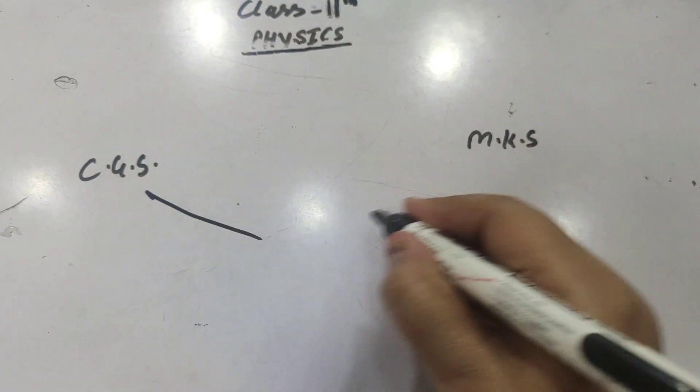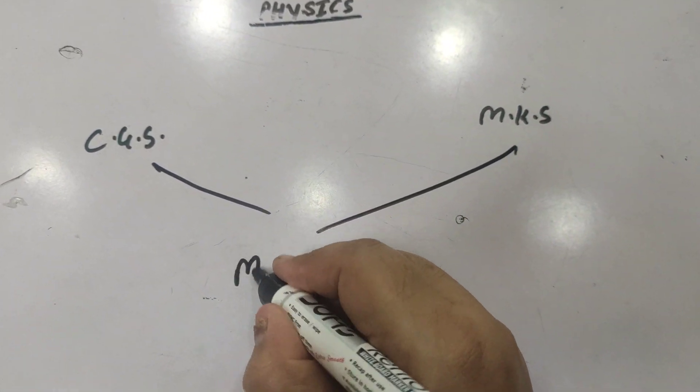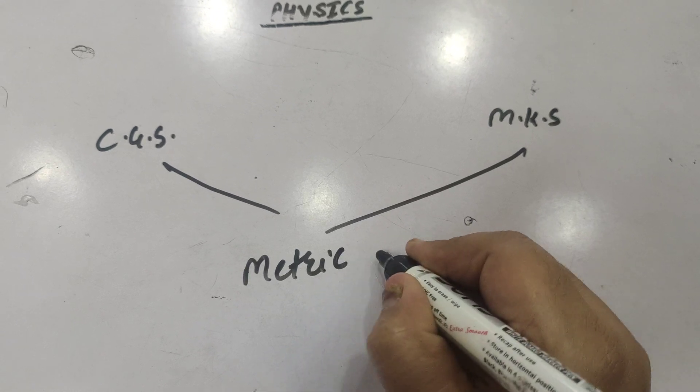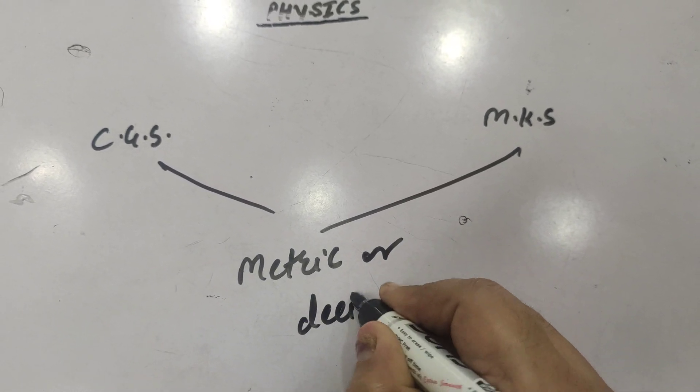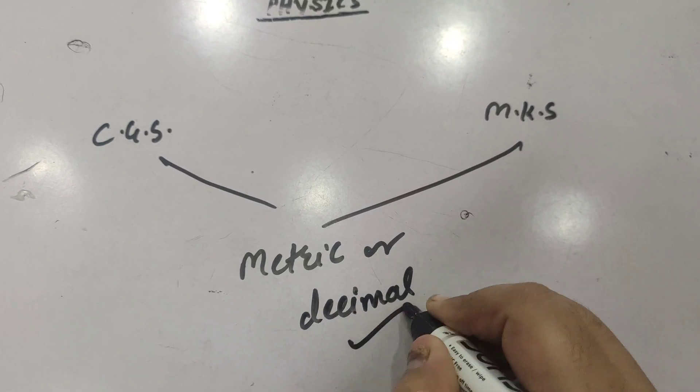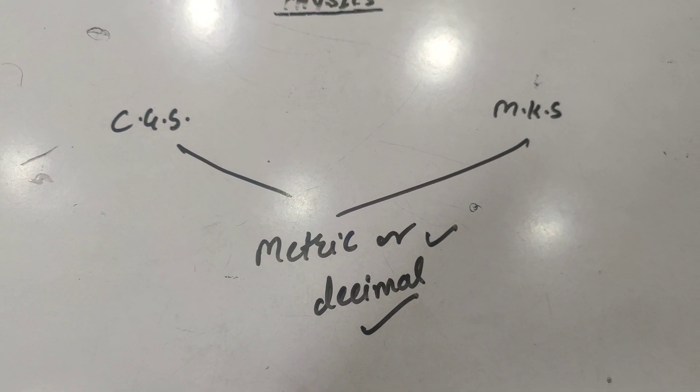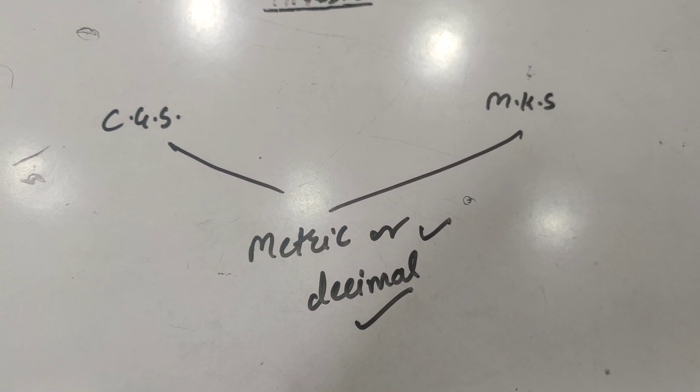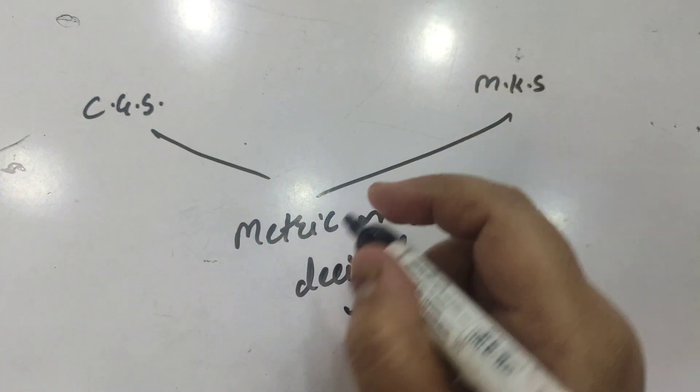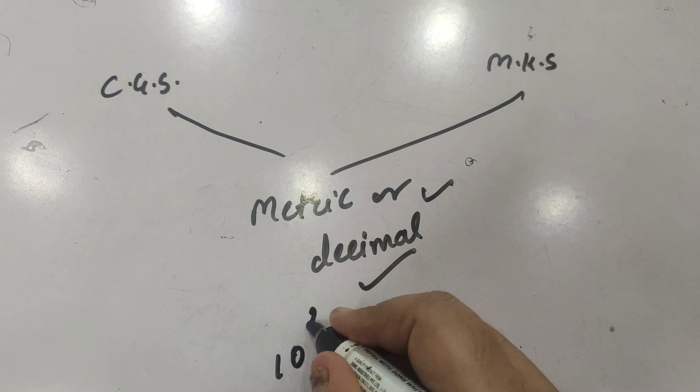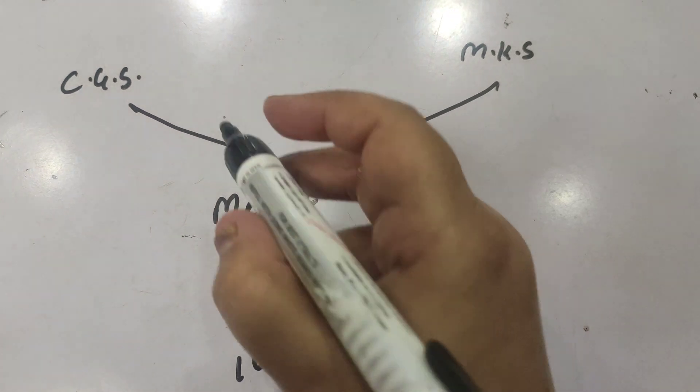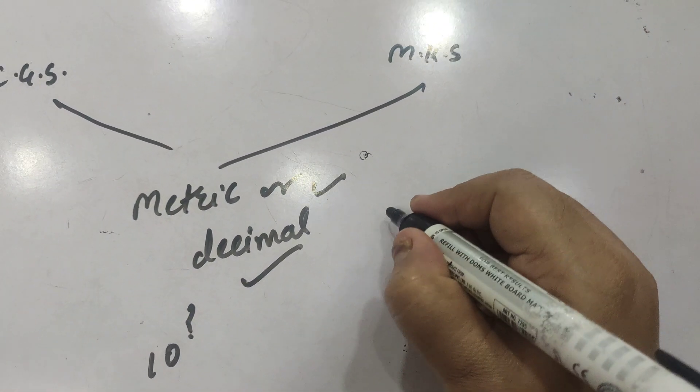CGS and MKS systems are also called metric or decimal systems. Why are these called metric or decimal systems? Because multiples and submultiples of basic units are related by powers of 10. For example, if we are...